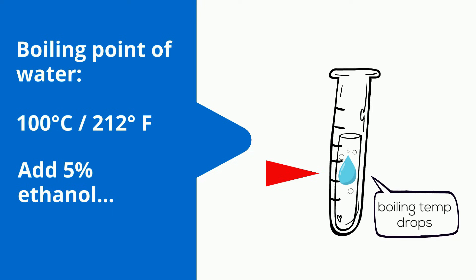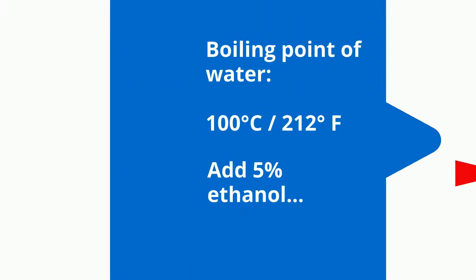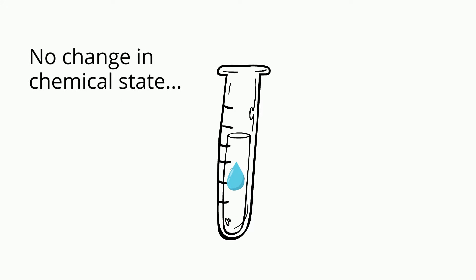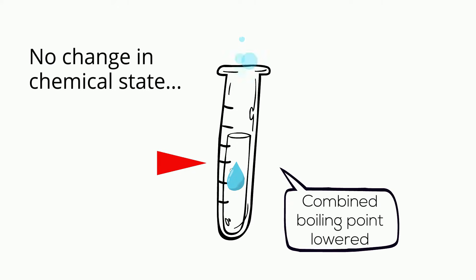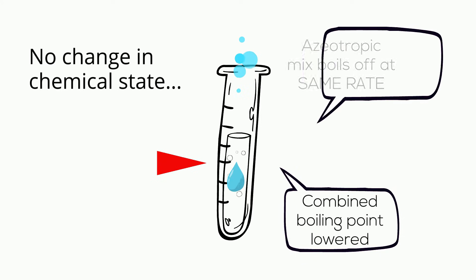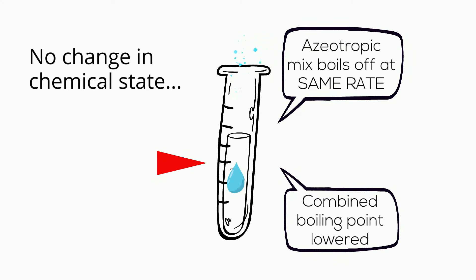This is very odd and unexpected. The two chemicals are still separate and distinct in the mixture, with no change in their chemical state. But somehow, the two chemicals work together to lower their combined boiling point. Most importantly, as an azeotropic mix, the two constituents boil off at the same rate.